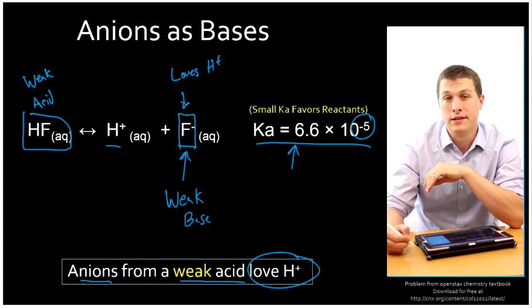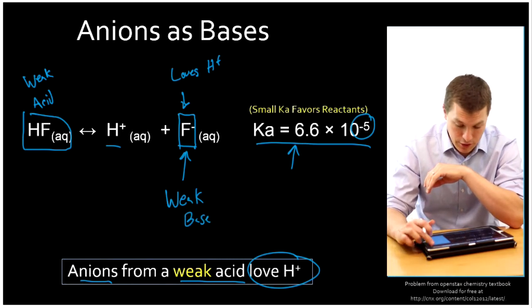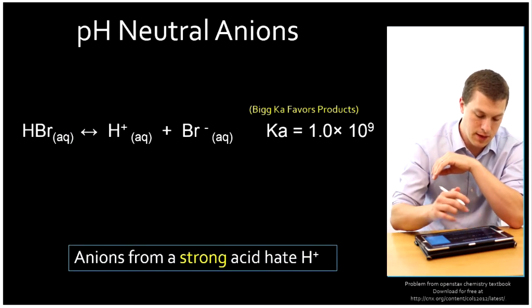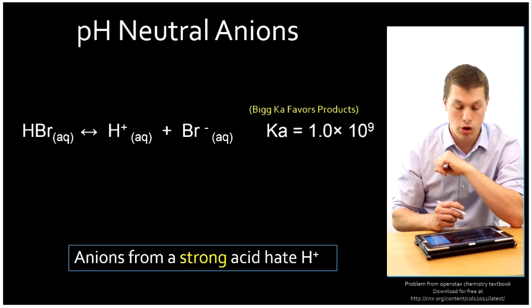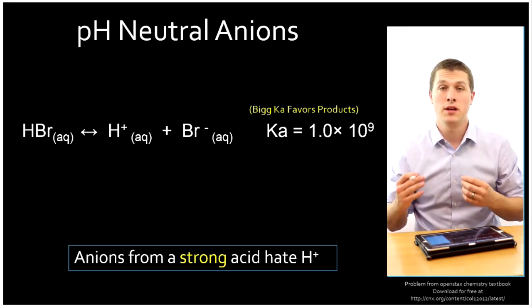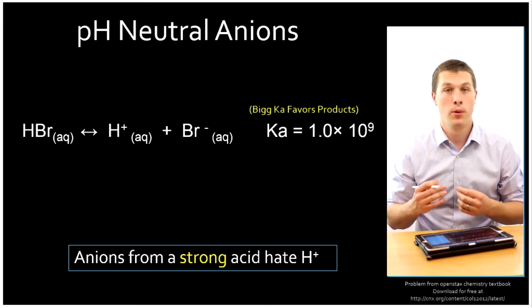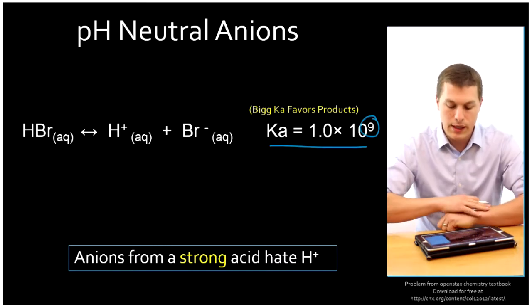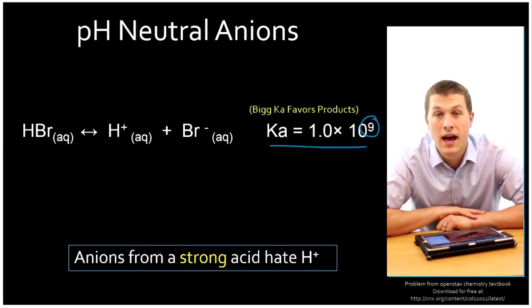But not all anions act as a base. For example, if I have hydrobromic acid and it splits apart into hydrogen ions and bromine, we could ask the same question about bromine. Is bromine going to want to hook up with another hydrogen ion? This Ka once again tells us the answer. It's got a really big exponent, 10 to the 9th.